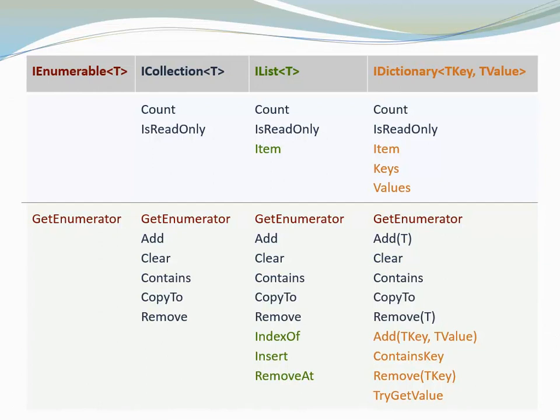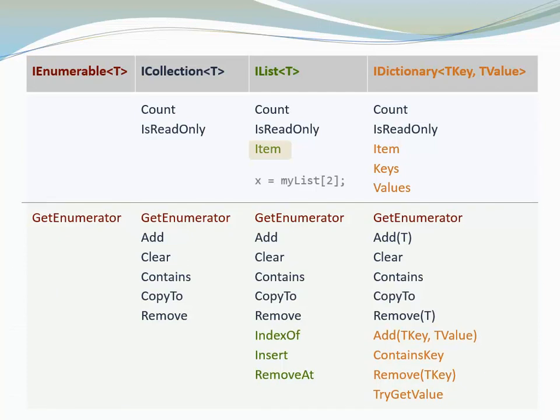One property that I want to point out in particular is the Item property. It enables the user to access a specified element by using an index in rectangular brackets, just like we access elements in an array. Here is an example. I have a list called myList and I use the Item property to access the third element and to assign it to a variable called x.